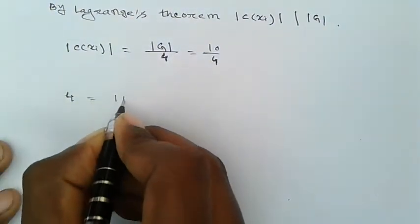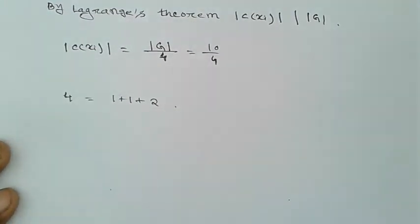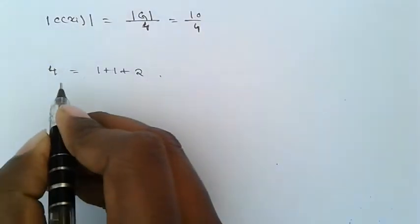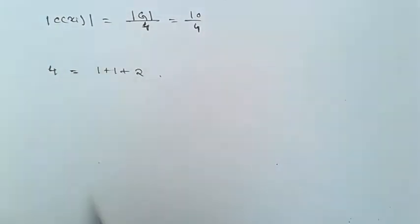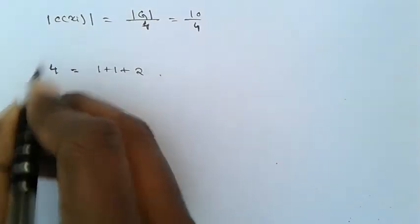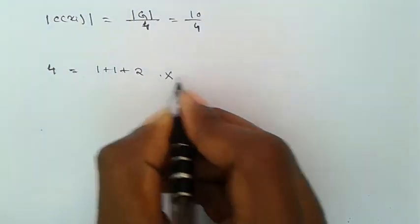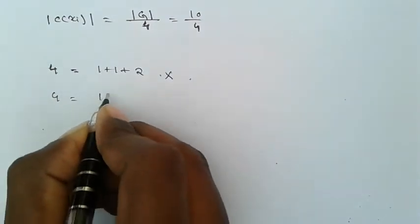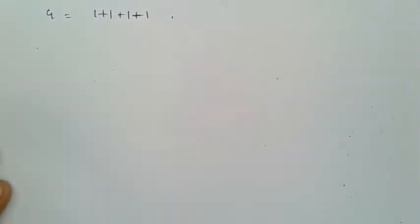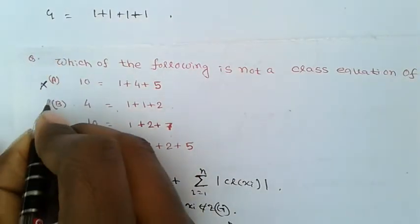The second option is 4 = 1 + 1 + 2. We use the theorem that every group of order less than or equal to 6 is commutative. Since the group has order 4, which is less than 6, every group of order 4 is commutative. For a commutative group, the class equation becomes 1 + 1 + 1 + 1 (each element in its own class). So option B is also false.